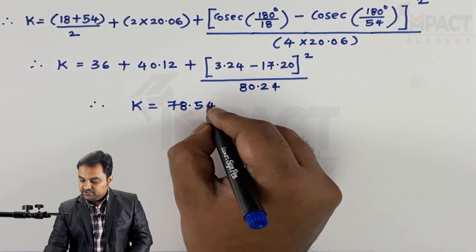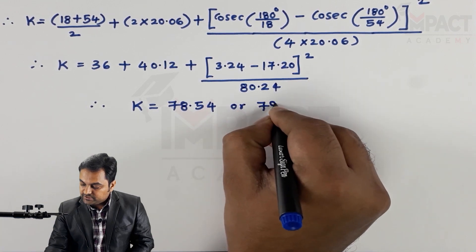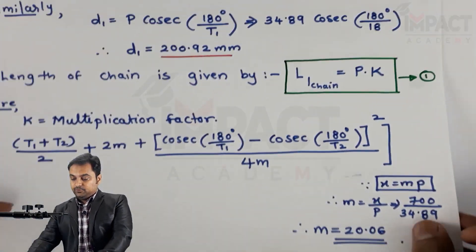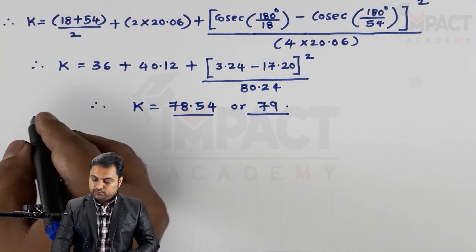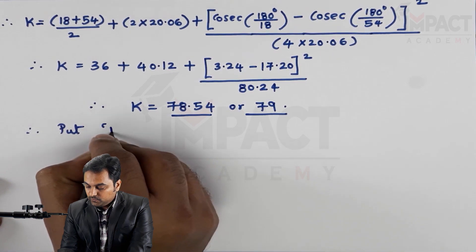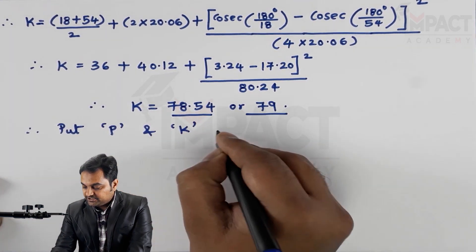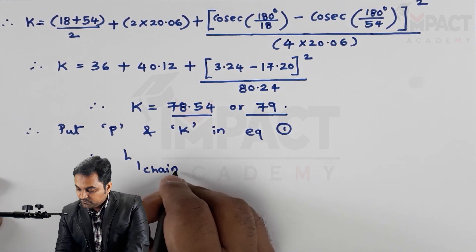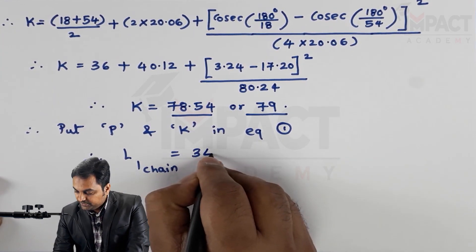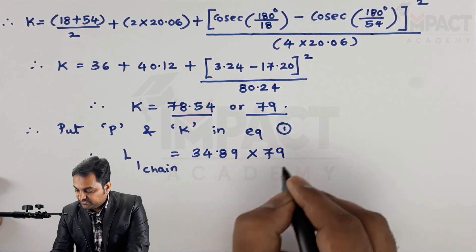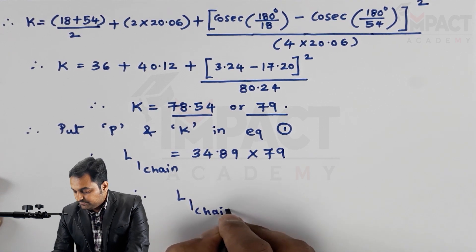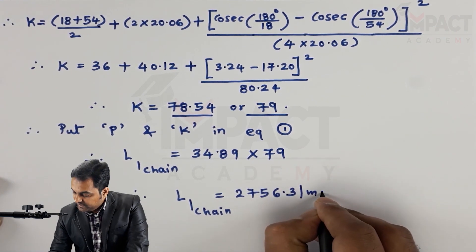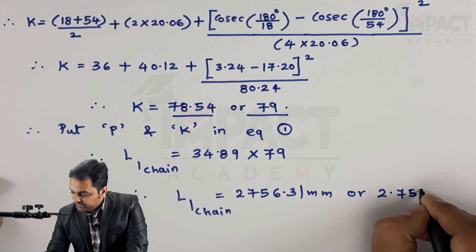It is better to round off k to 79. Now substituting pitch and k into equation one: Length of chain = 34.89 × 79 = 2756.31 mm, or equivalently 2.756 meters. This is the third answer.